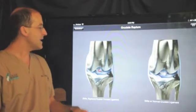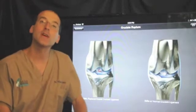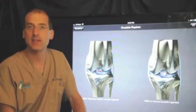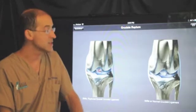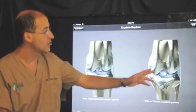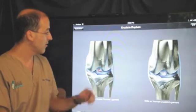What we're looking at here is a tear of what we call the cranial cruciate ligament in dogs and cats. In people it's the ACL - it's the same structure in dogs and cats with a slightly different name. The structure on the right is normal, and on the left it's torn.